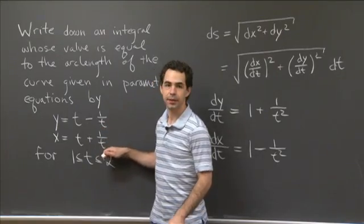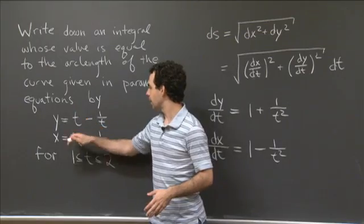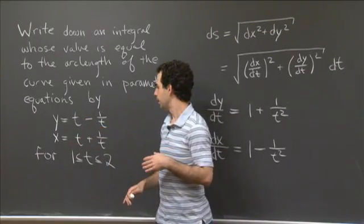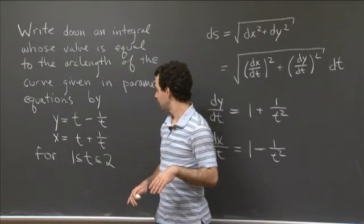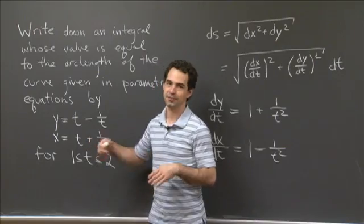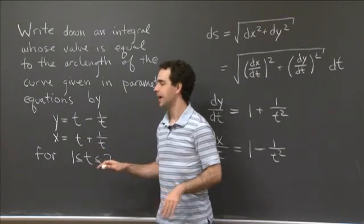So as t gets very, very big, you see that the point on the curve is getting very close to the line y = x, but not actually touching it. And you could try other things as t gets close to 0 from the positive side, as t gets close to 0 from the negative side. So this has some sort of asymptote, it seems like.